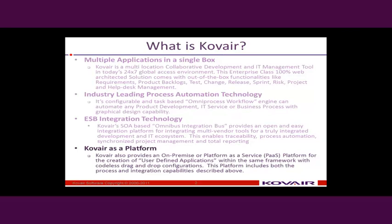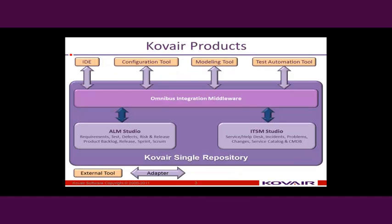Covier basically has three products. ALM Studio — we have two versions of it: one is a more traditional methodology like iterative and waterfall, and the other is an agile implementation, basically using Scrum. Then we have ITSM Studio, which is the implementation of ITIL version 3. And the third one is the OmniBus integration middleware, used for integration. You can buy any of these products either independently or in any combination.